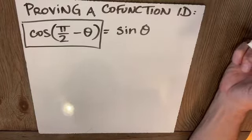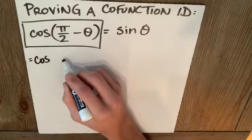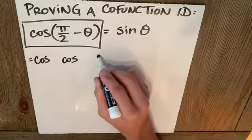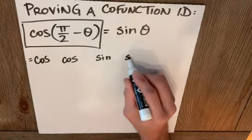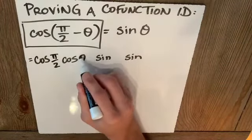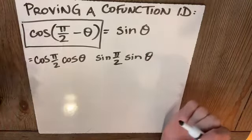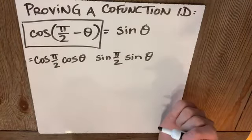And I certainly can do something with this. Because I know this is equal to cosine, cosine, sine, sine. And this will be α, β, α, β. Playing the role of α is π/2. Playing the role of β is θ.